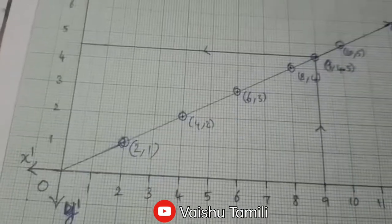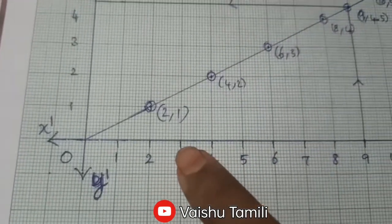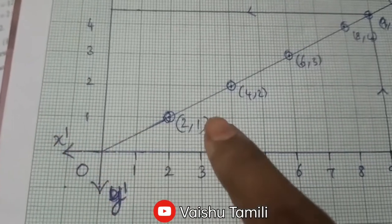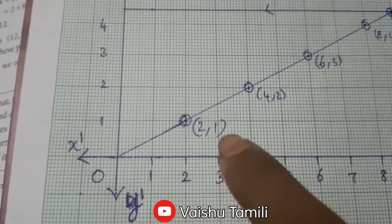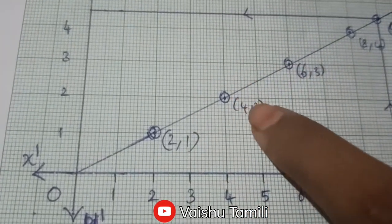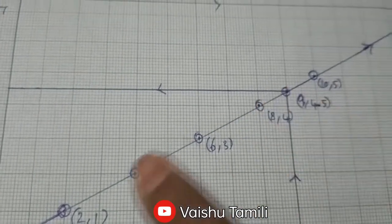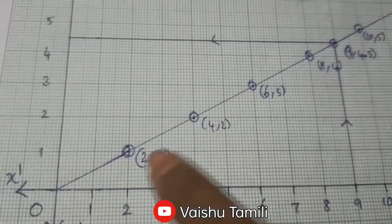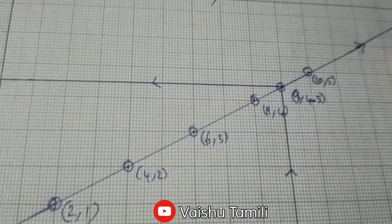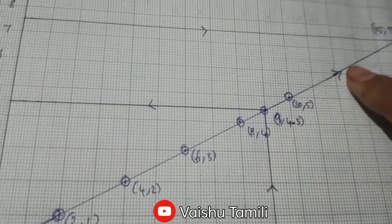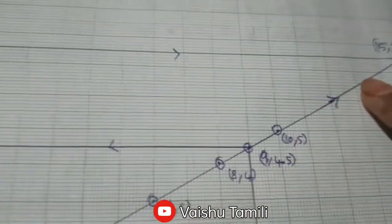Now mark the points. So 2 is on the x-axis, y-axis equals 1 unit. We will make a point. Add the points at (2,1), then 4, 6, 8, 10. Mark the points and there will be a straight line. We will make a line and extend it.